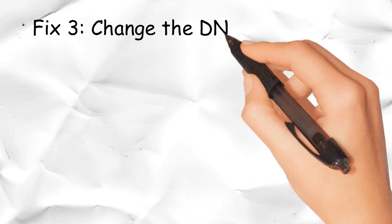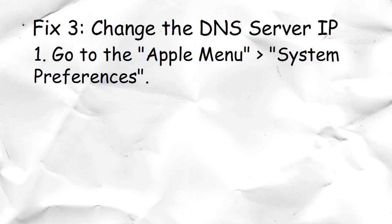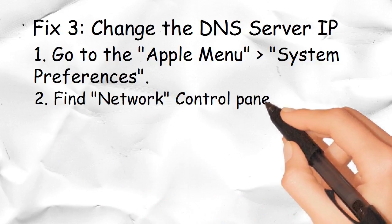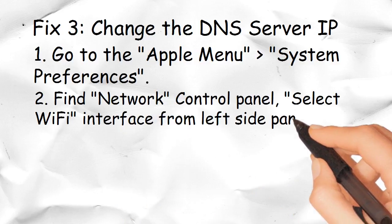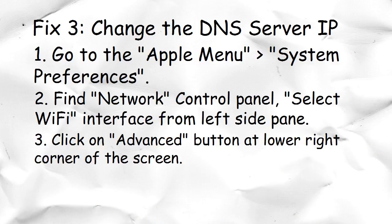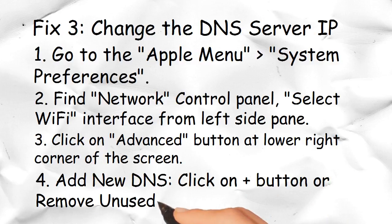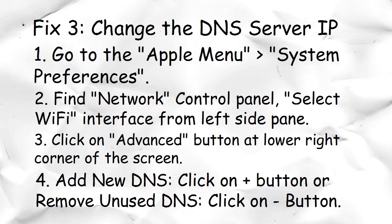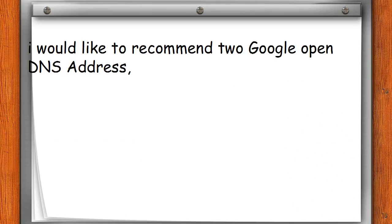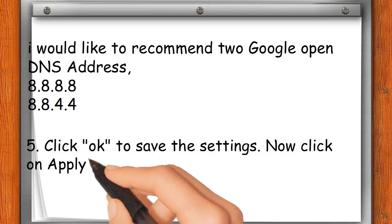Fix 3: Change the DNS server IP. 1. Go to the Apple menu, then System Preferences. 2. Find the Network control panel and select the Wi-Fi interface from the left side pane. 3. Click the Advanced button at the lower right corner of the screen. 4. Add a new DNS — click the plus button, or remove unused DNS by clicking the minus button. I recommend using Google's Open DNS addresses: 8.8.8.8 and 8.8.4.4. 5. Click OK to save the settings, then click Apply to confirm.